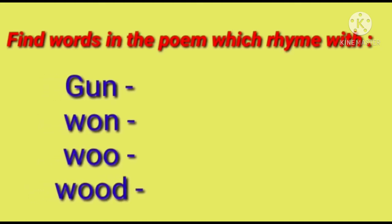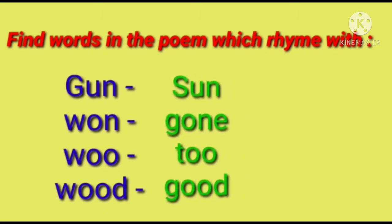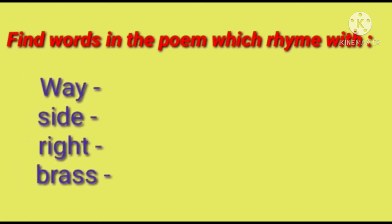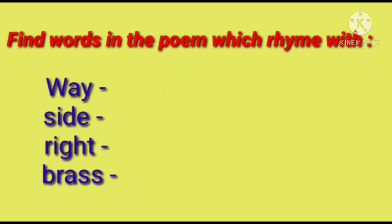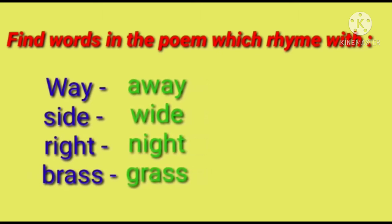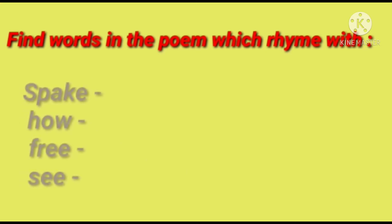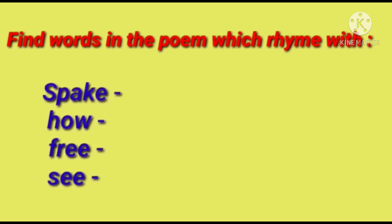The rhyming answers are: for gun/one/who/put — and the rhyming words found in the poem include: way, side, right, brass; and speak, how, free, see.